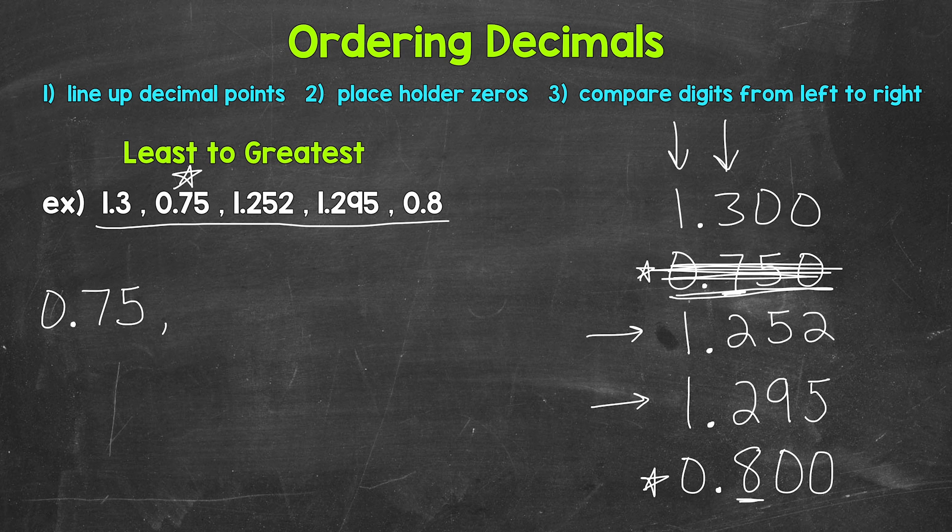Now, before moving on, I do want to mention another way to think about this. We can think in terms of the entire decimal part here. We have 750 thousandths compared to 800 thousandths. 750 thousandths is less than 800 thousandths.